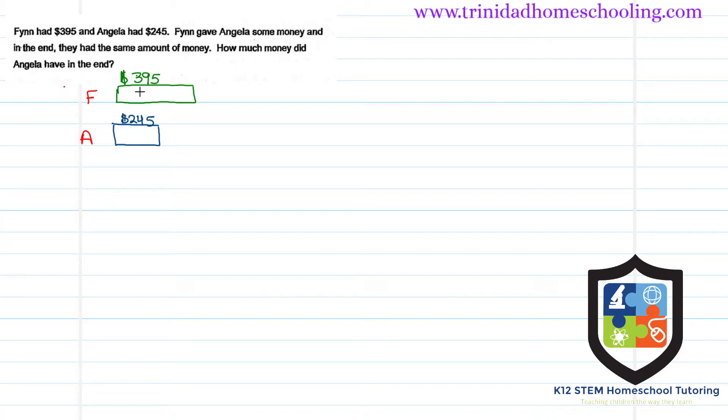Now if you think of these two as bars of candy and you wanted to make sure that you and your friend would have the same amount, what you would do is measure the two and break off the excess piece. So let's find what is this excess piece. This excess piece here would be $395 minus $245, and this will give us $150. So this extra piece here is $150.